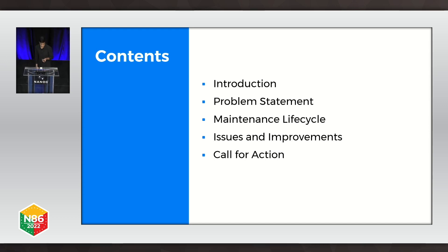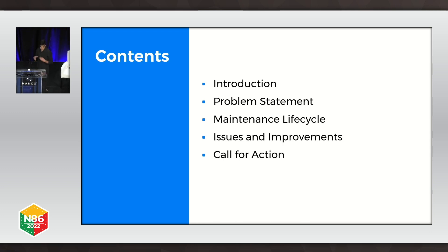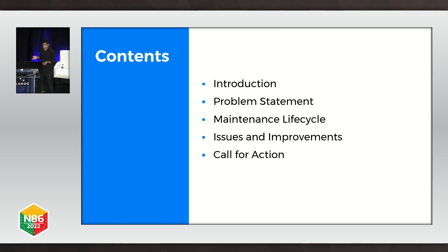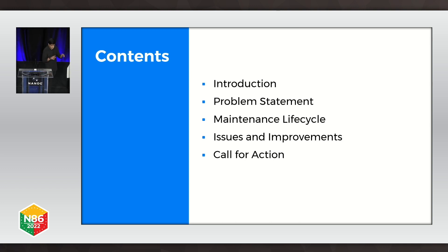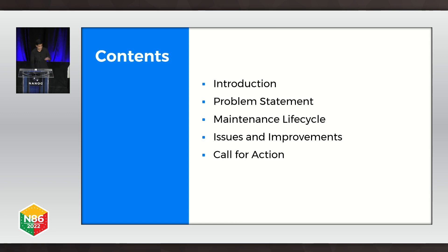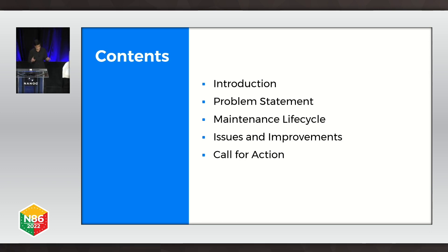Let's go over the flow of the presentation. We'll start with an introduction to our backbone networks, which is the space in which these maintenances take place, to get a high-level overview of how the networks look. We'll then go over why we are doing this, which is our problem statement. The middle section will talk about the services involved, how they interact with each other, the issues observed, and some improvements we drove to address those issues. The last section will cover how we as a networking industry can collaborate, drive improvements, and possibly standardization in this space.